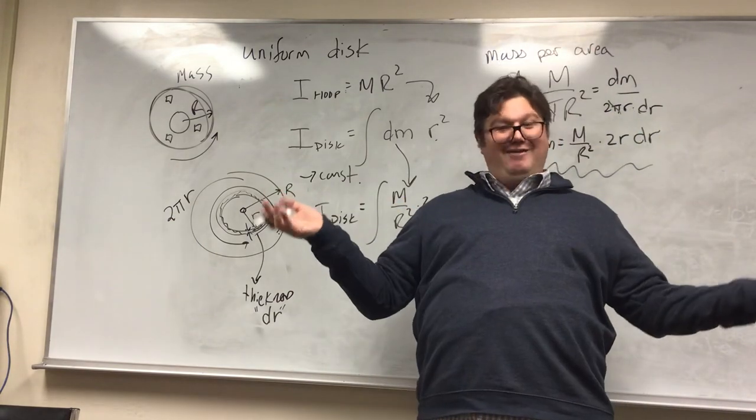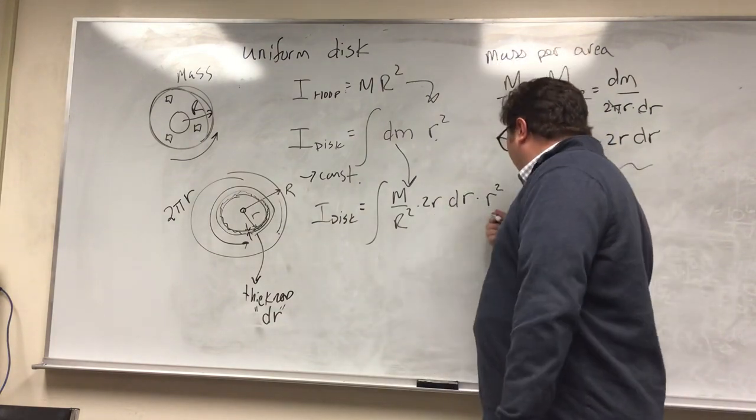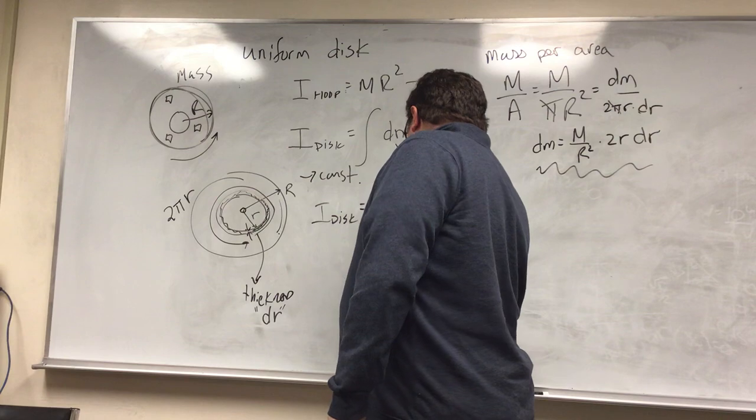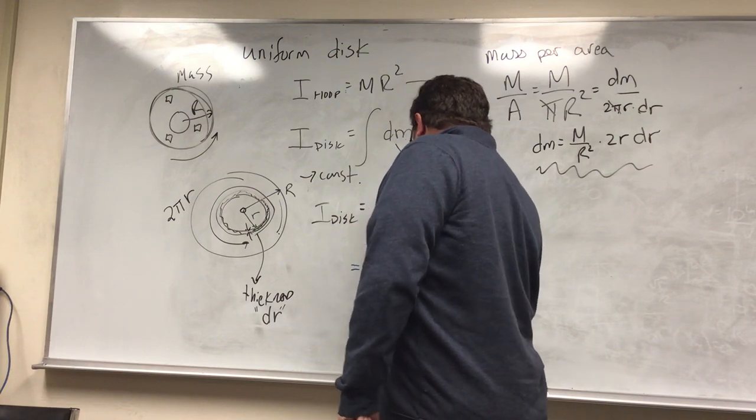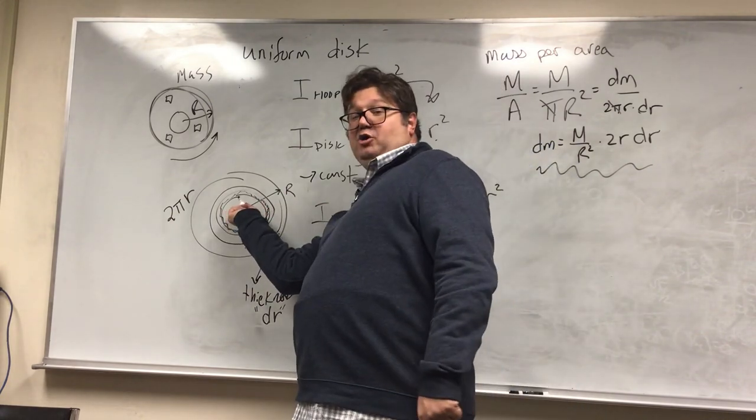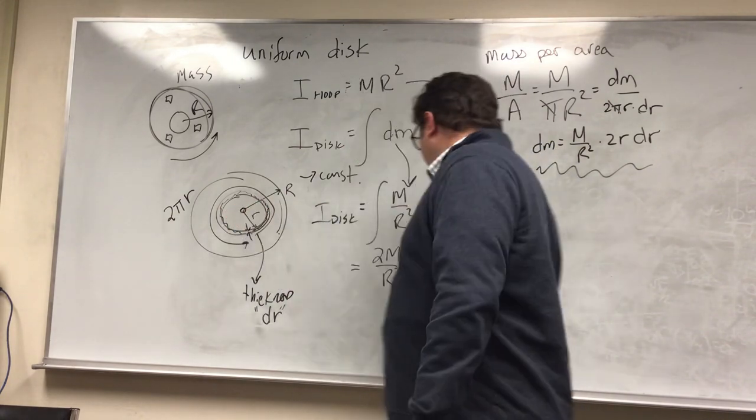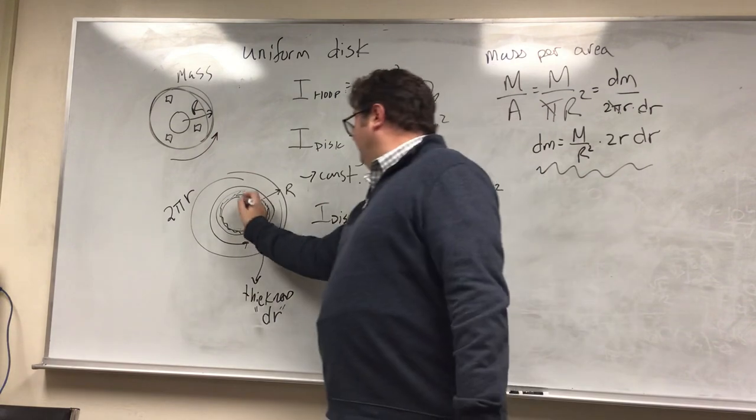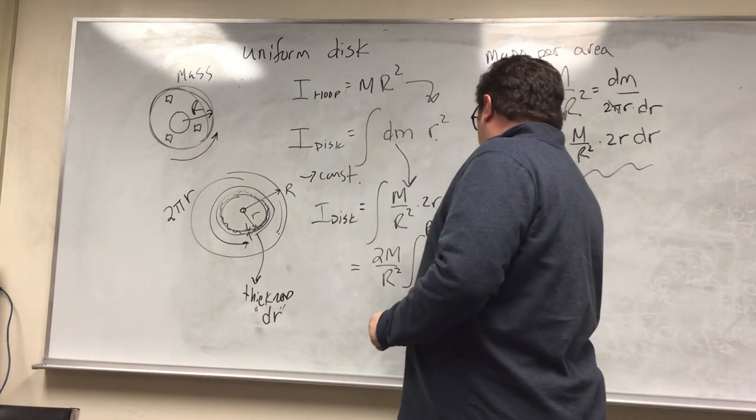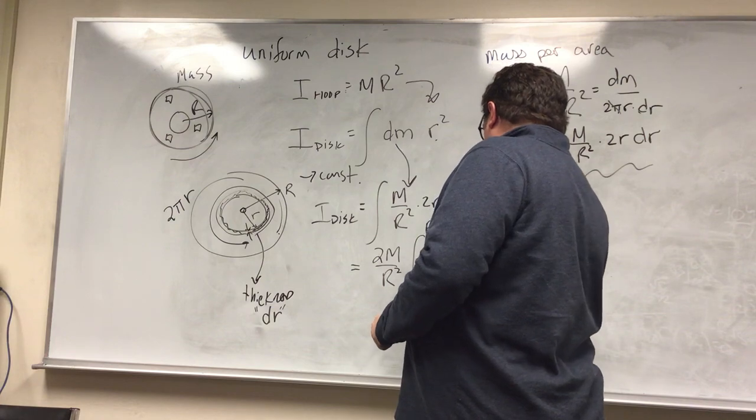Alright, we've got to multiply our little r's together. We can rewrite this to be 2m over r squared. My integral is going to go from 0, that's an infinitesimally small hoop, and it's going to grow until we have a hoop that is completely at the edge of the disk. This is going to be times r cubed dr.